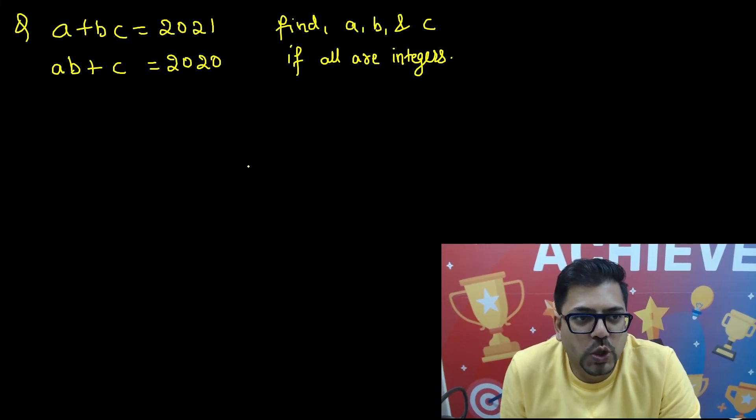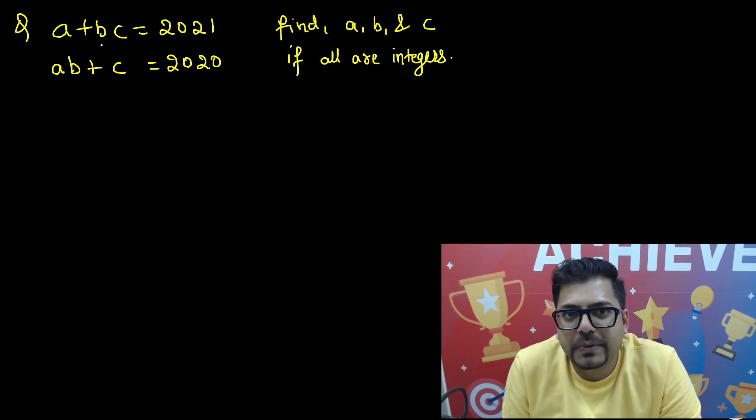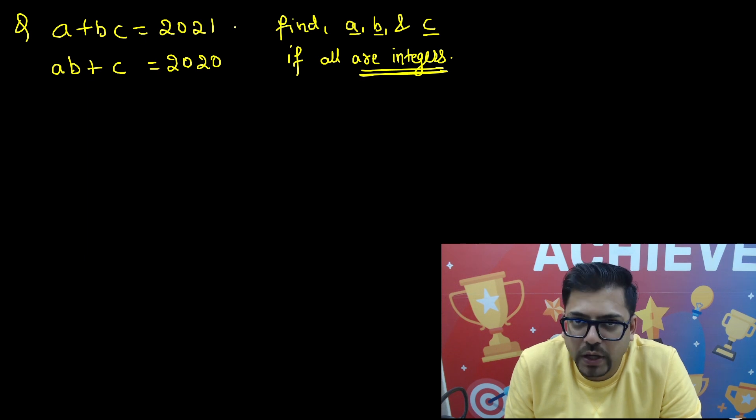Hey guys, so let's talk about this beautiful problem in today's session. Here A plus BC is given as 2021 and AB plus C is given as 2020. And we have to find the value of ABC given the condition that ABC are integers.